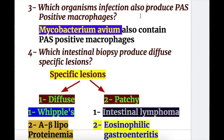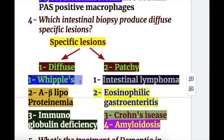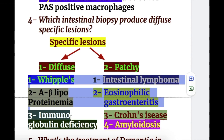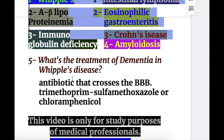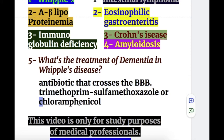Q3 — Mycobacterium avium infection also causes PAS-positive macrophages. Q4 — diffuse specific lesions are produced by three disorders: Whipple's disease, A-beta lipoproteinemia, and immunoglobulin deficiency. Q5 — treatment of dementia in Whipple's disease is an antibiotic that crosses the blood-brain barrier: trimethoprim and sulfamethoxazole, or chloramphenicol.